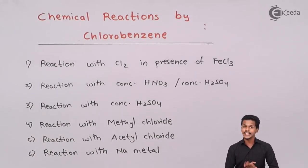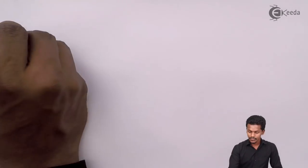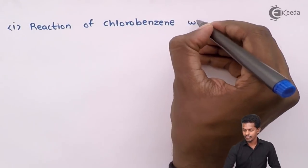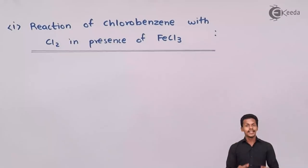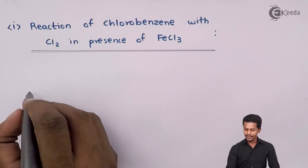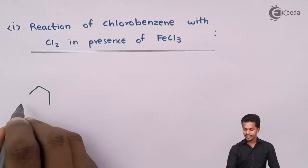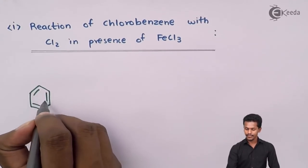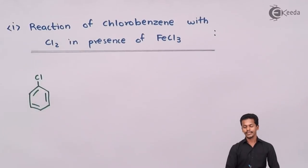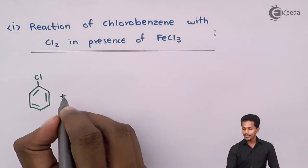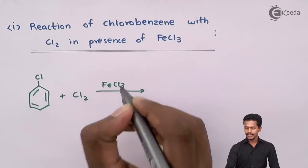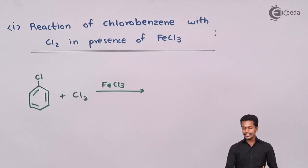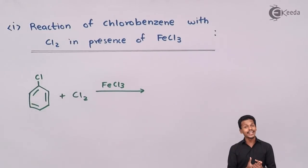Starting with the first one: what will happen if chlorobenzene is reacted with Cl2 in presence of FeCl3? Suppose we are using chlorobenzene and we react it with Cl2 in presence of FeCl3 as the catalyst. This is a kind of substitution reaction that would take place here, and we know that aromatic compounds do not undergo addition reaction very easily.